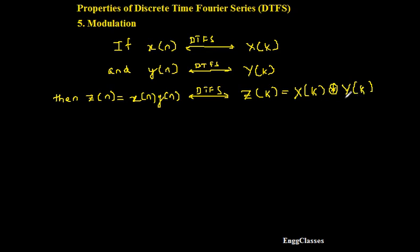So multiplication in time domain is transformed to convolution of DTFS coefficients, where x of k and y of k are DTFS coefficients.